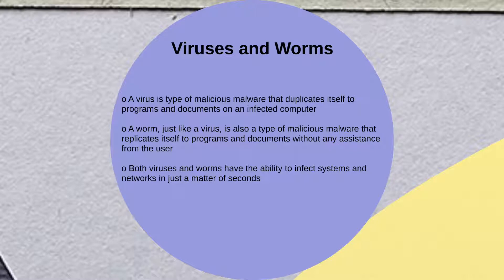The next vector is attacks by viruses and worms. A virus is malicious malware that duplicates itself to programs and documents on an infected computer. A worm, like a virus, replicates itself to programs and documents without any assistance from the user. They both have the ability to infect systems and networks in just a matter of seconds.